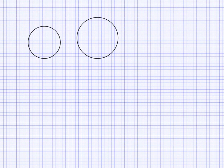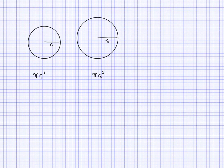The areas are proportional to the frequencies. If we give the first circle radius R1 and the second circle radius R2, the area of the first is πR1² and the area of the second is πR2². The ratio of the areas of the two circles is equal to F1 to F2, where F1 and F2 are their respective total frequencies.